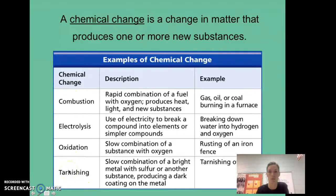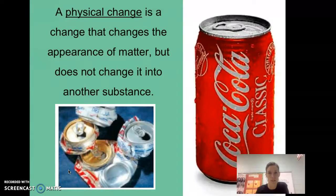Physical change is a change that changes the appearance of matter but does not change it into another substance. Here we see a coke can and it has been smashed, so we're changing the shape. Shape is a physical property of a substance or an object. In this case, a soda can is an object. We're changing the shape, we're crushing the can.